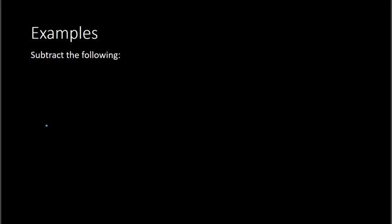Now let's work with a few examples where you need to subtract. Here we have negative 3 minus 2. To subtract this, you can think of this as negative 3 plus a negative 2. As you learned in the previous lesson, if you are adding two numbers with the same sign, you add the absolute values — so 3 plus 2 gives me 5. The signs are both negative, so the answer remains negative. My final answer is negative 5.